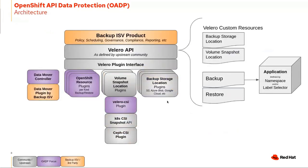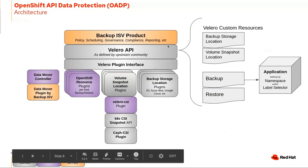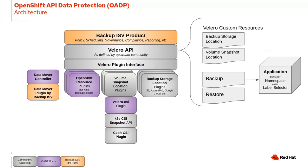Moving on to the architecture — since we depend heavily on Velero, the Velero API is central to our approach. At the top, a backup ISV project can provide policy, scheduling, governance, compliance, and reporting, integrating with the Velero API on the cluster. The Velero API exposes four major custom resources: a backup storage location — where all backup data is put — and a volume snapshot location, which supplies Velero with an API to take snapshots of underlying cloud storage volumes like EBS or GCP using their native snapshot APIs.